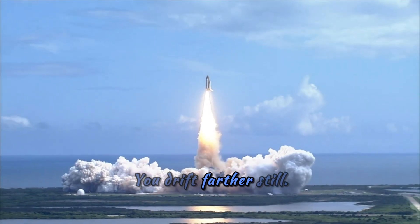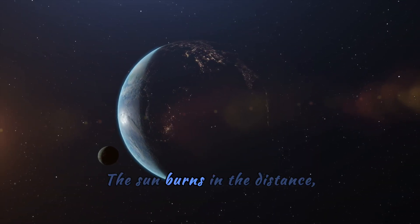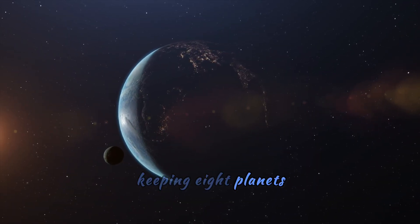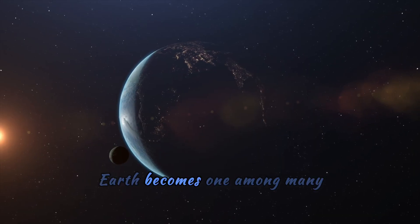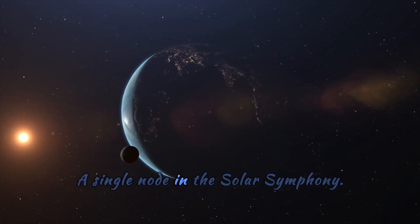You drift farther still. The moon circles quietly around, our companion in an ancient dance. The sun burns in the distance, eight planets in its gravitational spell. Earth becomes one among many, orbiting in delicate balance, a single node in the solar symphony.